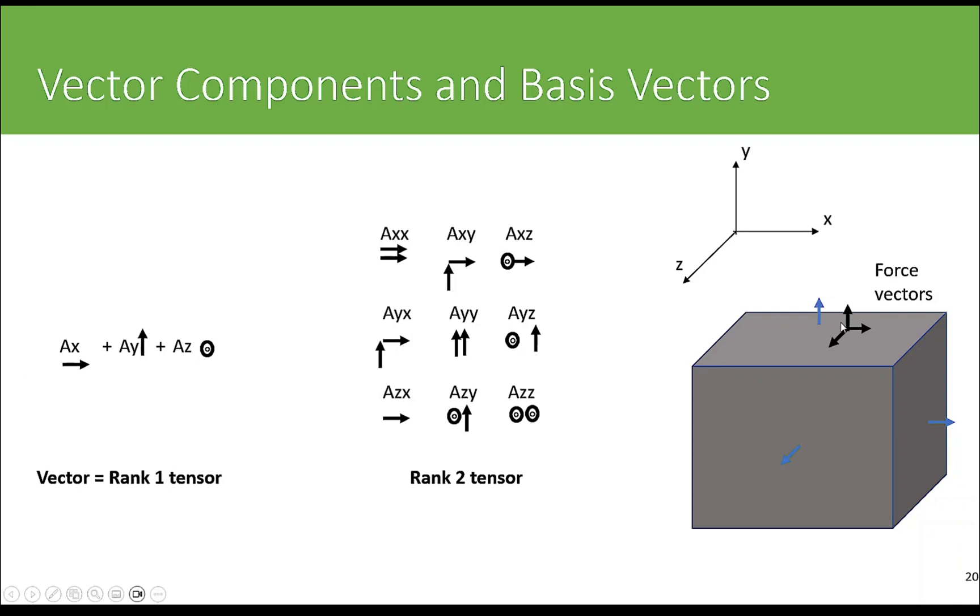So for example, AYY, which is this one, might refer to the Y-directed force on a surface whose area vector is in the Y direction. Similarly, AXY might refer to the X-directed force on a surface whose area vector is in the Y direction, and so forth. This combination of nine components and nine sets of two basis vectors makes this a rank 2 tensor.